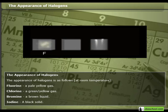Fluorine: a pale yellow gas. Chlorine: a green or yellow gas. Bromine: a brown liquid. Iodine: a black solid.